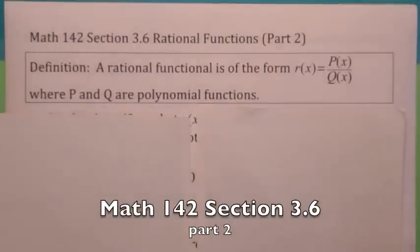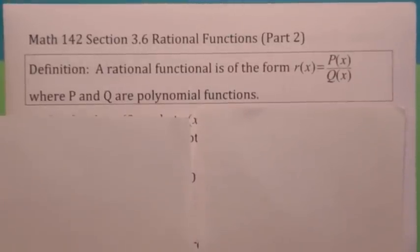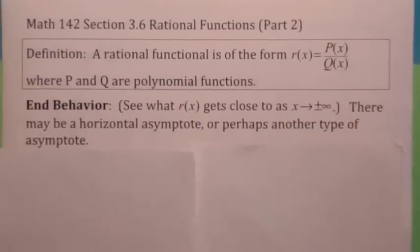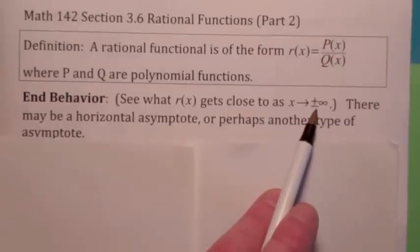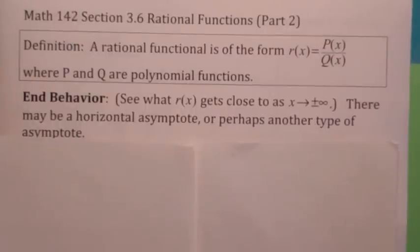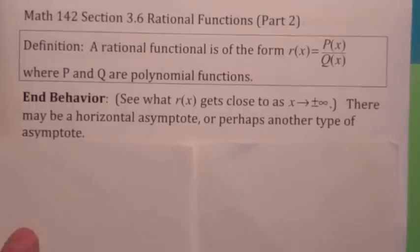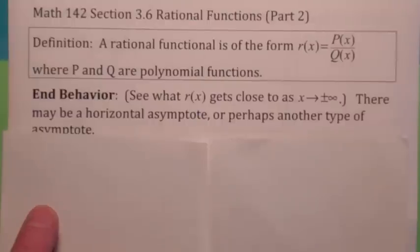In this video, we're going to focus mainly on what's called the end behavior of rational functions. We've already looked at end behavior of polynomial functions. With rational functions, it's a little different. The end behavior of a rational function asks: what does the y-value get close to as x goes to plus or minus infinity? It turns out you don't always have a horizontal asymptote — you could have other types of asymptotes as well, but it will be asymptotic to something. It might not be a horizontal line, though.